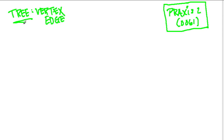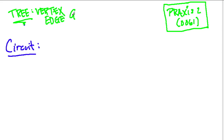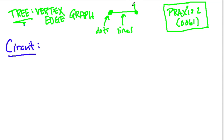So, a tree — what is it? Well, we've got to step back a little bit and get some background. First, we have to define a circuit. Now, a circuit — the idea is that you're on a vertex edge graph. And let me even go back: what's a vertex edge graph? Well, a vertex edge graph is just some type of graph that has vertices, or dots, and edges, or lines. Let me build this one right here — this is a vertex edge graph, and it can look like anything, really.